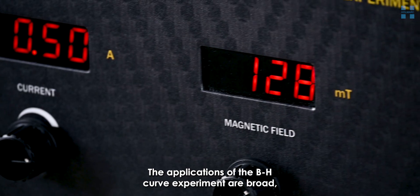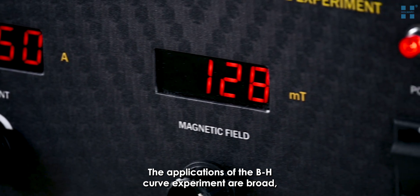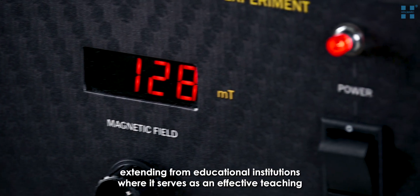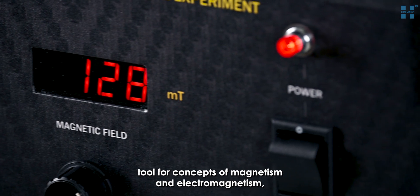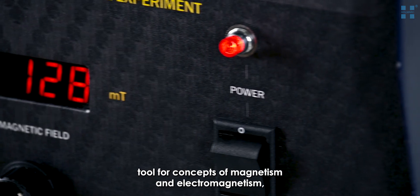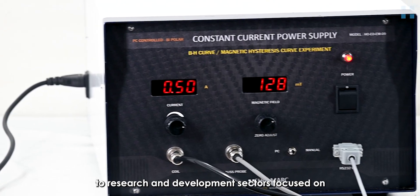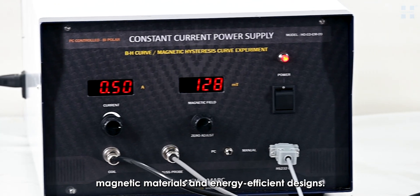The applications of the BH-Curve experiment are broad, extending from educational institutions where it serves as an effective teaching tool for concepts of magnetism and electromagnetism, to research and development sectors focused on magnetic materials and energy-efficient designs.